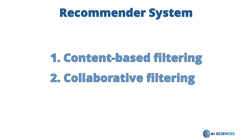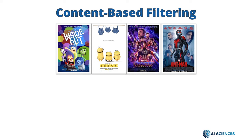First we will see what is content-based filtering. Let's say we have a movie recommender system where we have only four movies: Inside Out, Minions, Avengers, and Ant-Man.